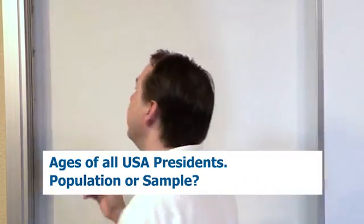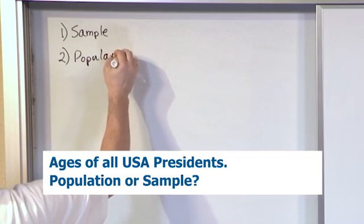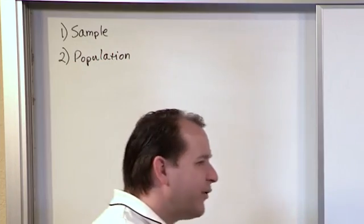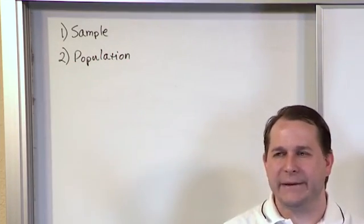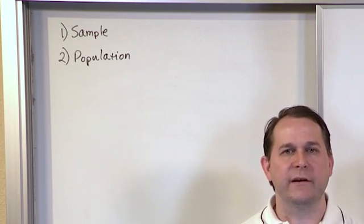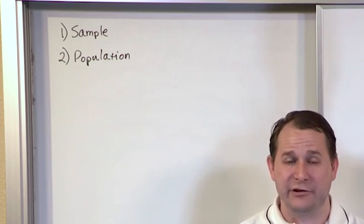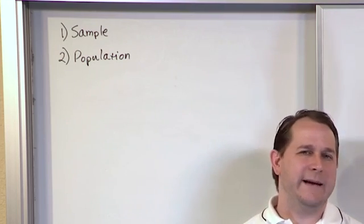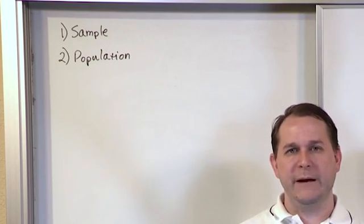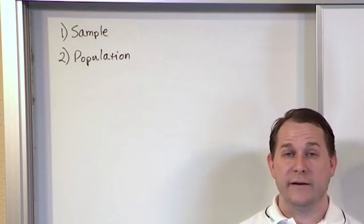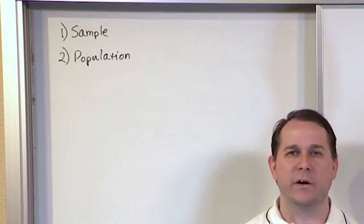And I would argue that this is a population. Because it's clear that we're talking only about presidents. Presidents would not be a representative sampling of any larger group of people. Presidents are pretty special, right? They're very, very special people that eventually get to that position. So, it doesn't make sense that presidents would be a small subset of some larger group of people.